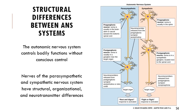There are structural differences between the nerves that send signals for parasympathetic and sympathetic reactions. You'll need to know these for anatomy, but I won't test you on them. Just be familiar with the idea that the structure of these nerves, their organization, where they emerge, how they connect with target organs, and the neurotransmitters they release are different.